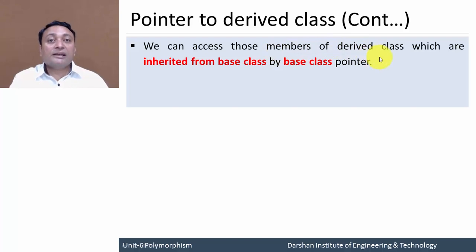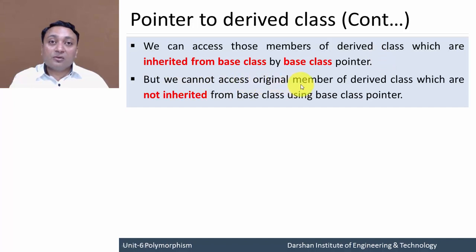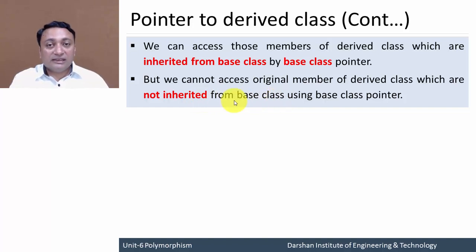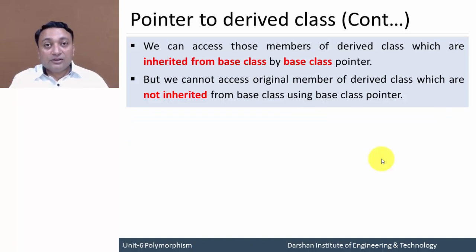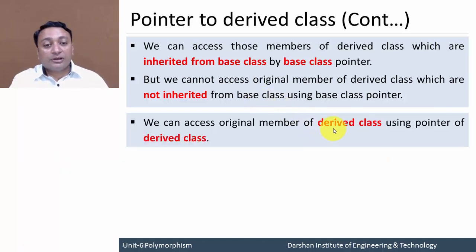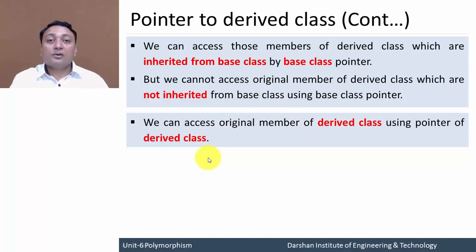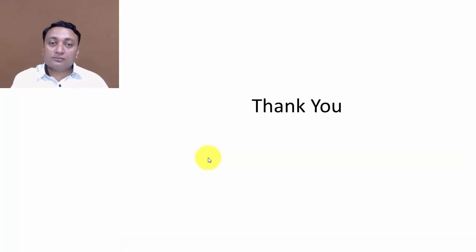For pointer to derived class, we can say that we can access those members of the derived class which are inherited from base class, but we cannot access original members of the derived class which are not inherited from base class — it will throw an error, as we have seen in our program. If you want to access the original members of the derived class, you need to create a pointer of derived class type. This is how pointer to derived class works. Thank you.